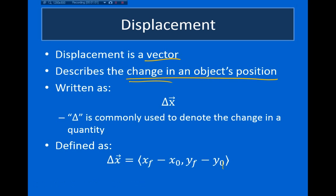When we talk about displacement, we denote it with delta x. This triangle is the Greek letter delta, and we'll be using this notation very frequently in this class. Delta basically means the change in whatever quantity follows it. So you could read this as the change in x, or the change in position, where x is the vector describing position.